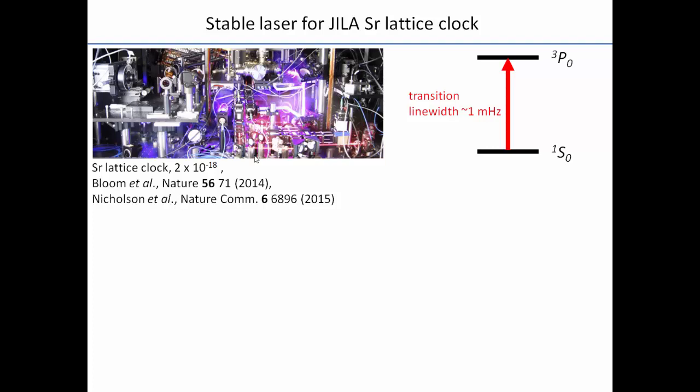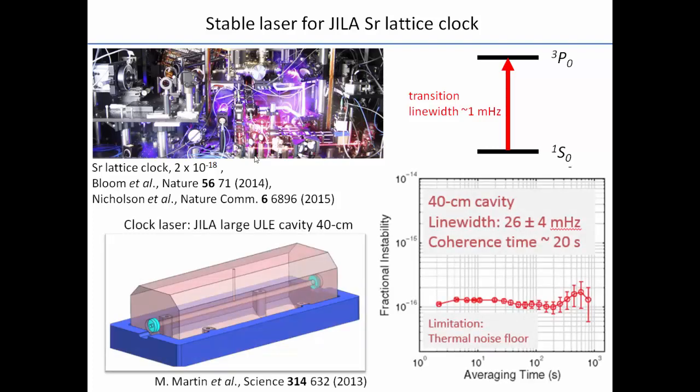At JILA, we are building the most accurate atomic clock based on strontium atoms. In that system, we need a super stable laser to probe the transition from the state 1S0 to 3P0, and that transition linewidth is 1 millihertz. Our current system is based on a 40 centimeter ULE cavity which has a linewidth of 26 millihertz, stability of 1×10⁻¹⁶ from 1 second to 1,000 seconds, and a coherence time of 20 seconds.